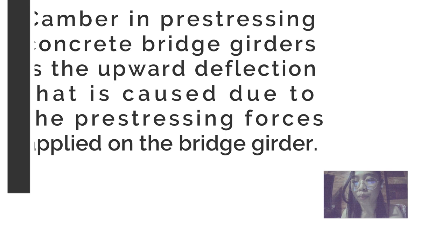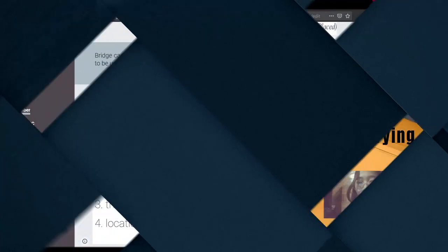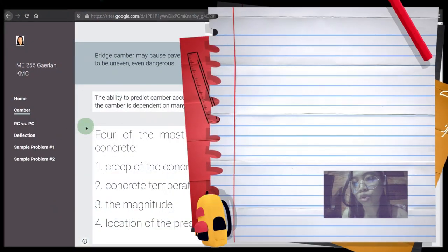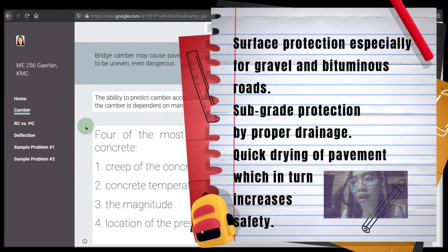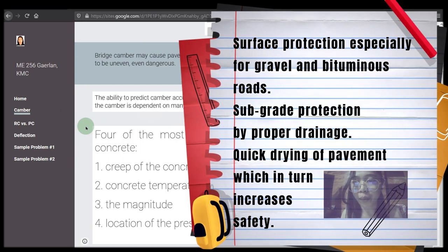Camber in prestressing concrete bridge girders is the upward deflection that is caused due to the prestressing forces applied on the bridge girders. The objectives of providing cambers are surface protection, especially for gravel and bituminous roads, pavement protection by proper drainage, quick drying of pavement, which in turn increases safety.